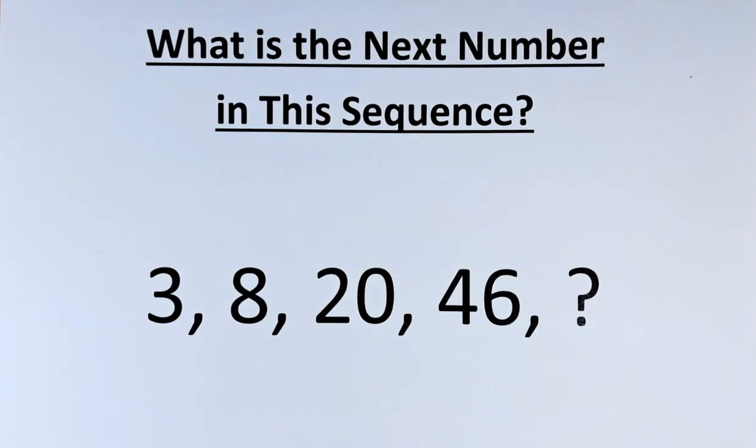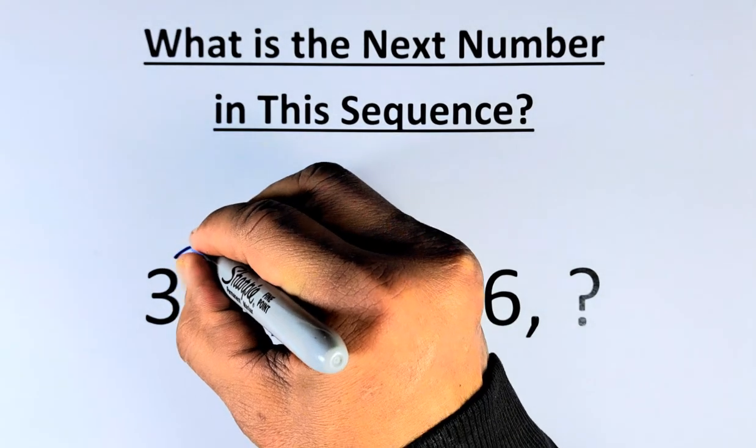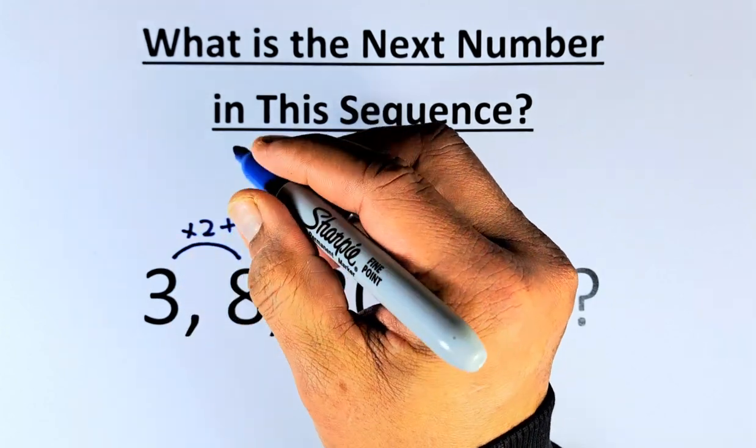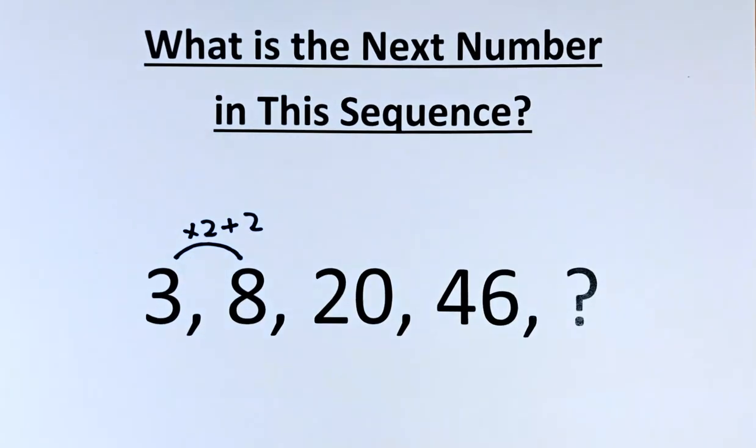So we need to start with 3 and from 3 to 8, what we're going to do, we're going to multiply by 2 and we are going to add 2. So 3 times 2 is 6, 6 plus 2 is 8.